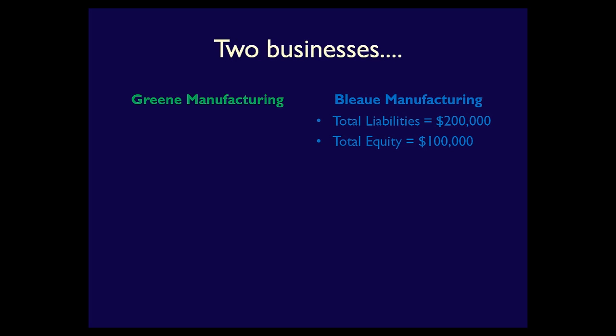Now let's look at blue manufacturing. They have the same total equity of $100,000, but they have liabilities of $200,000. Their debt-to-equity ratio is two times, or 200%, calculated as 200,000 divided by 100,000. This means that for every $2 of debt, blue has only $1 of equity. They are mainly debt-financed, meaning that the debt has financed or purchased a larger portion of their assets.